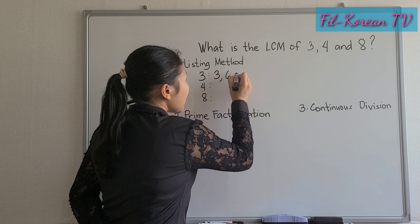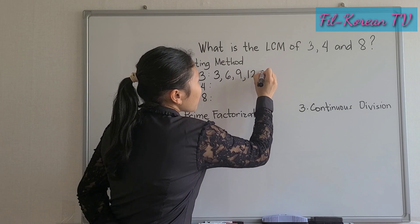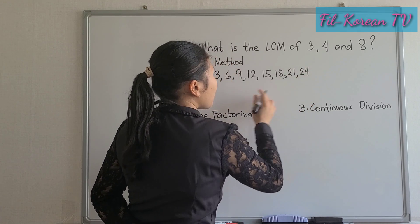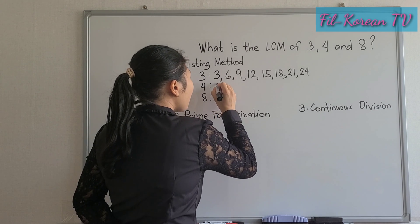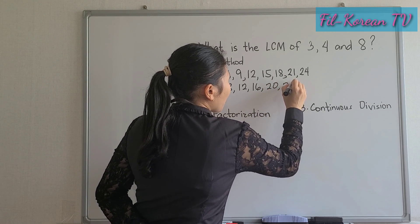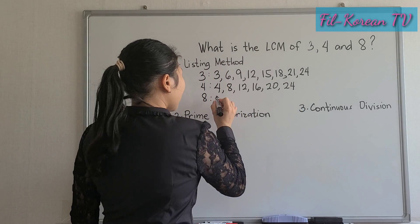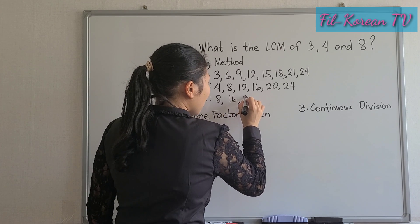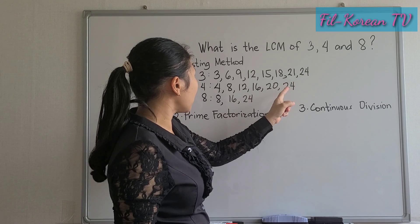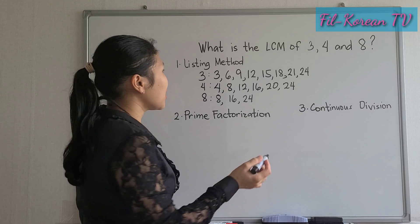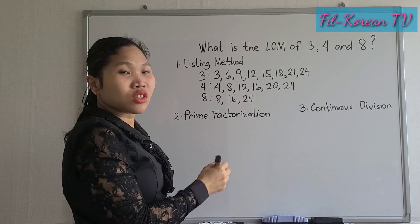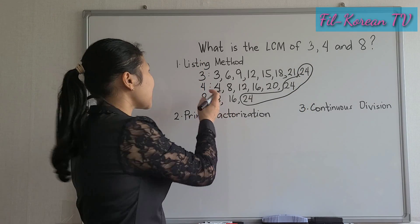Multiples of 3: 3, 6, 9, 12, 15, 18, 21, 24. Then write also the multiples of 4: 4, 8, 12, 16, 20, 24. Then let's write the multiples of 8: 8, 16, 24. Since 24 appears in all three lists — it is present for 3, 4, and 8 — so 24 is the LCM. Again, this is the listing method.